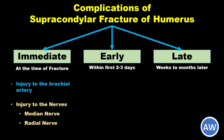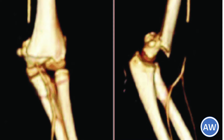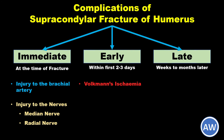Moving on to early complications: Volkmann's ischemia is an ischemic injury to the muscles and the nerves of the flexor compartment of the forearm. It is caused by occlusion of the brachial artery. Volkmann's ischemia is an emergency of the highest order and needs immediate intervention.